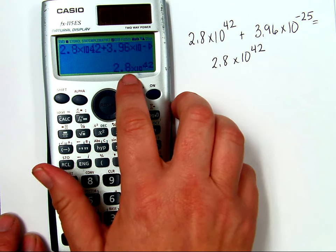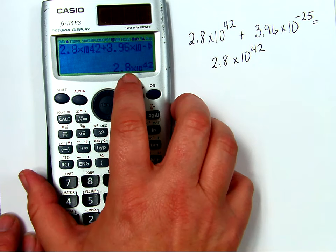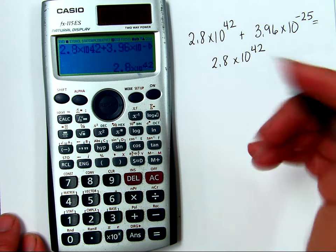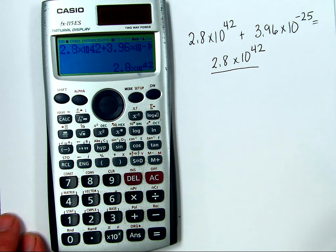And as you can see, the answer is 2.8 times 10 to the 42, which is the same answer that we got.